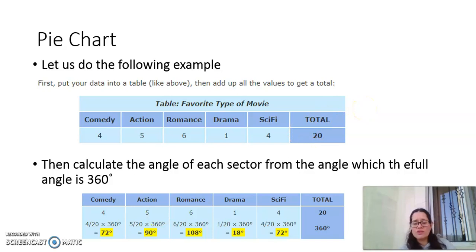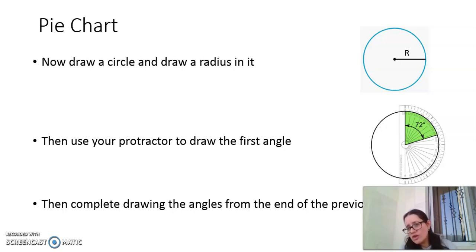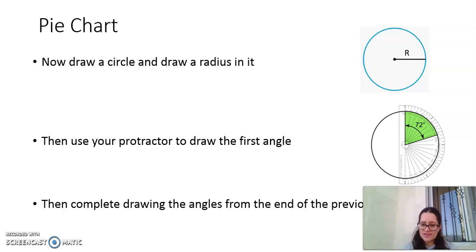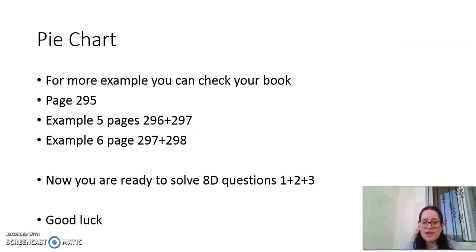The next step is to draw the circle, mark the center, and draw a radius. Then place the center of the protractor on the center of the circle and draw the first angle. From the end of that angle, continue drawing each remaining angle in turn to complete the pie chart. For more examples and steps, you can refer to your book on pages 295 to 298.